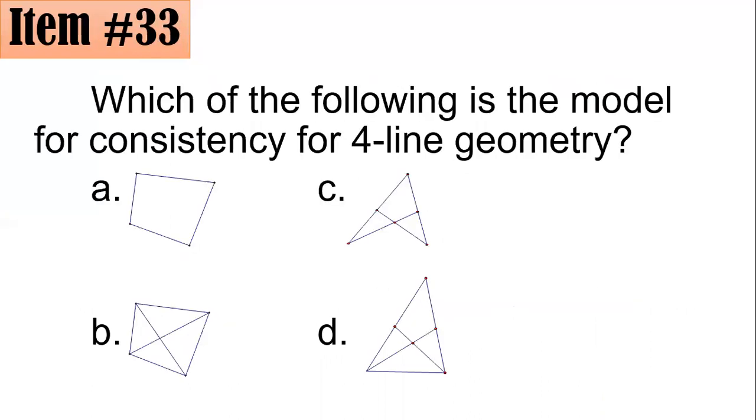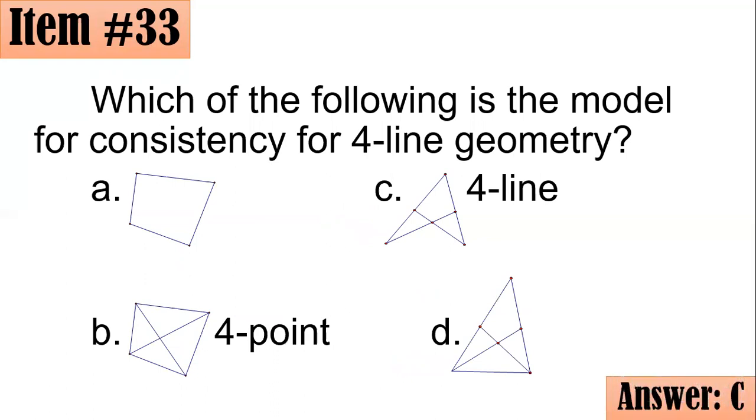Okay, 33. Which of the following is the model for consistency for four-line geometry? Did you go for A, B, C, or D? Take a look. Which of these do you think is the model of consistency for four-line geometry? So four-line geometry is in modern geometry. And the answer here is letter C. Letter B option, this one, is what you call the four-point geometry. The line model of consistency for four-point geometry. If you have four points and you will draw all the lines possible, you could see that there are six lines. Here we have four lines. We have one, two, three, and four. And in four-line geometry, there are six points.